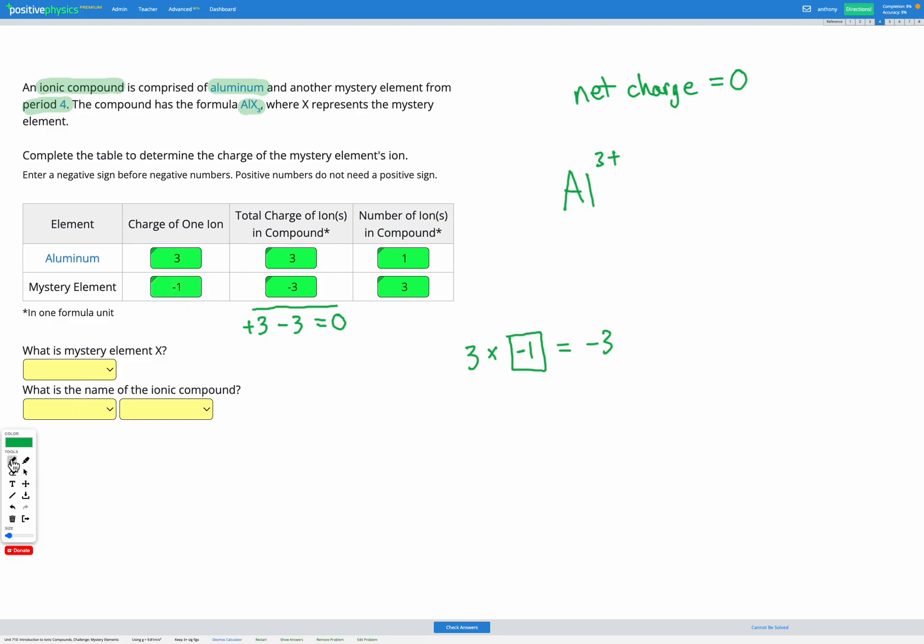And if we draw that out just to show it visually, we had one aluminium three plus. If our X, our mystery element, has a charge of one minus and we have three of those, we can see our total positive charge is plus three for aluminium. Our total negative charge is minus three for our X, our mystery element, and minus three, positive three, cancel out to give us zero. Wonderful.